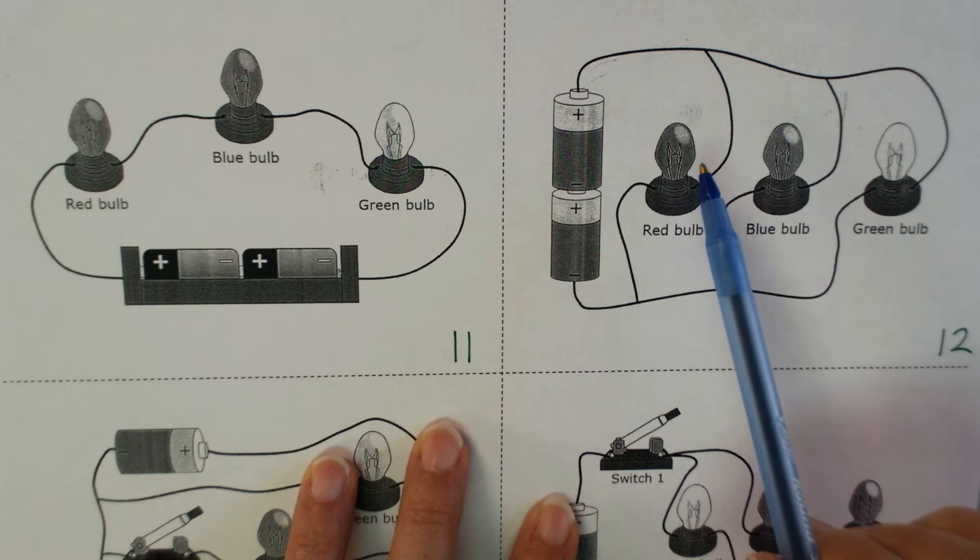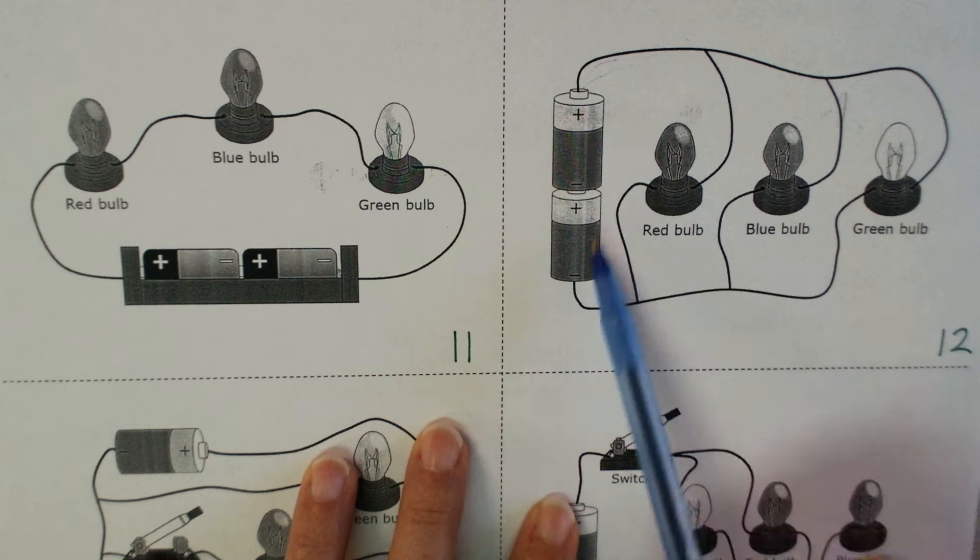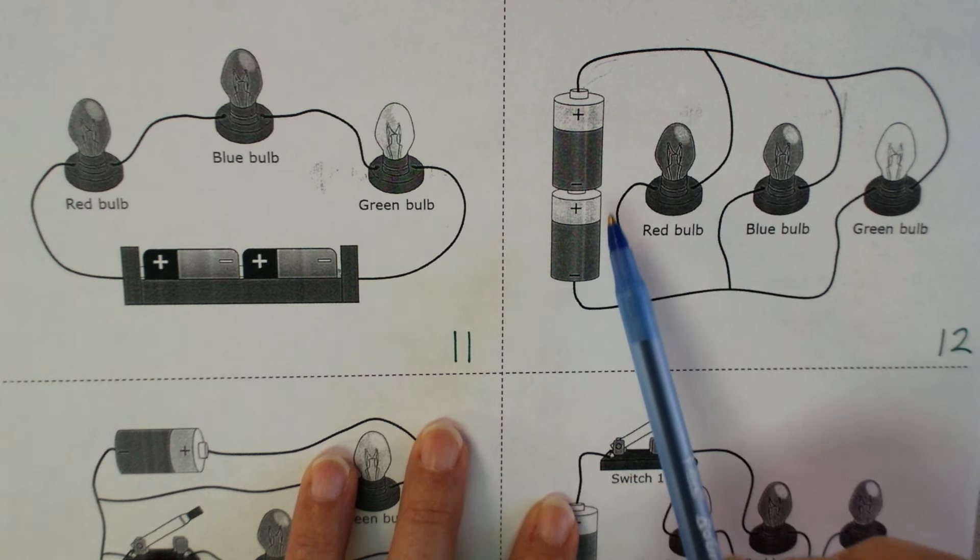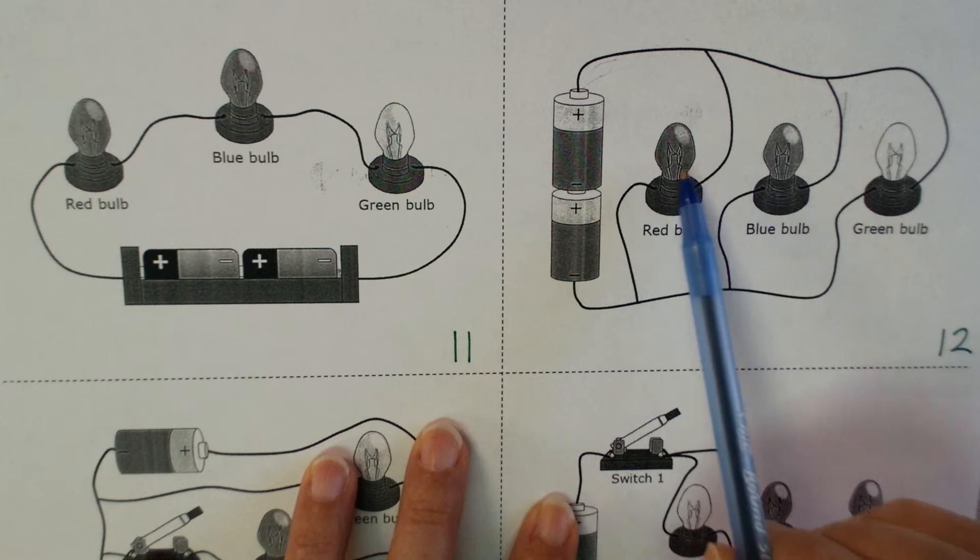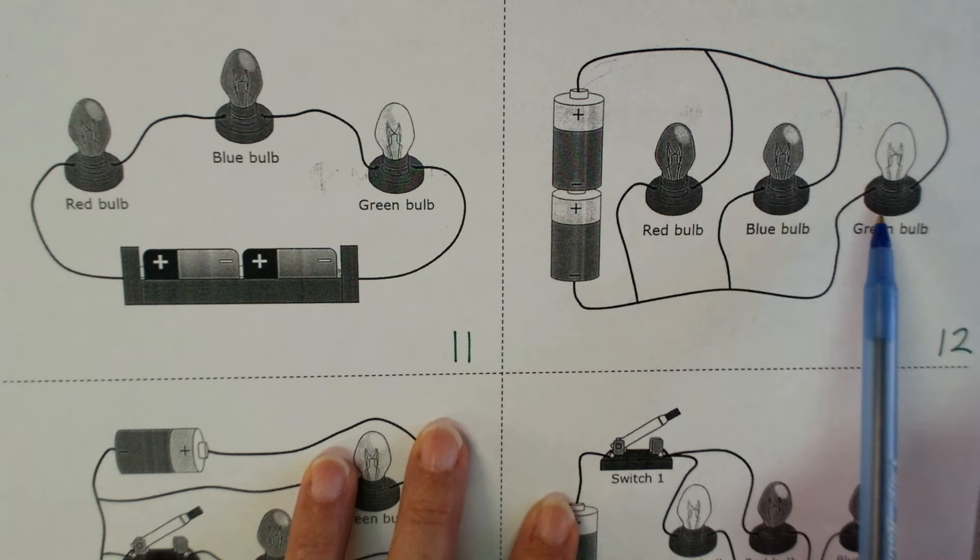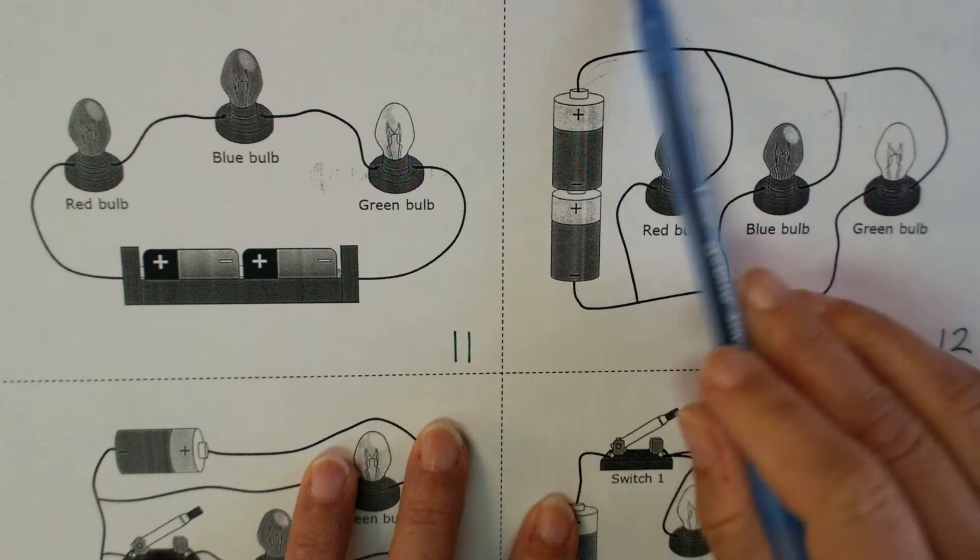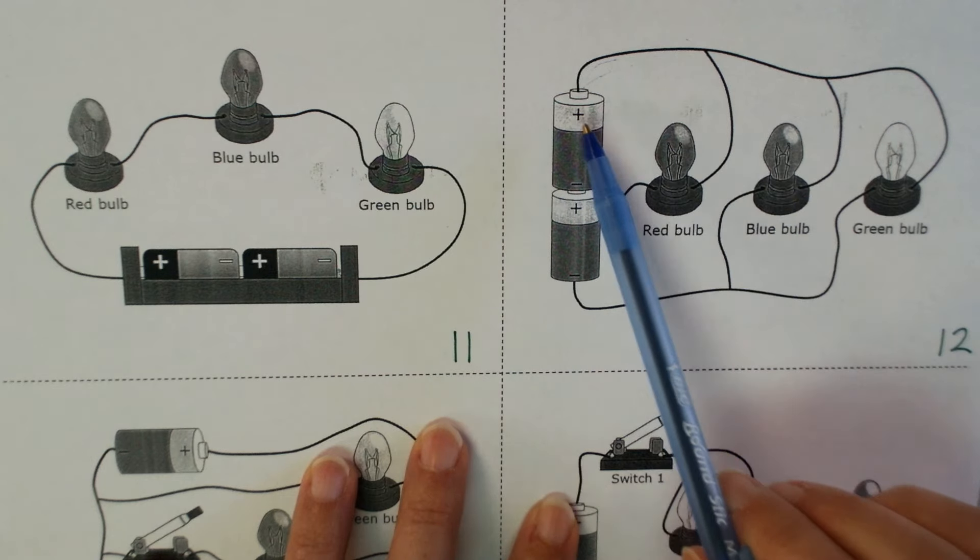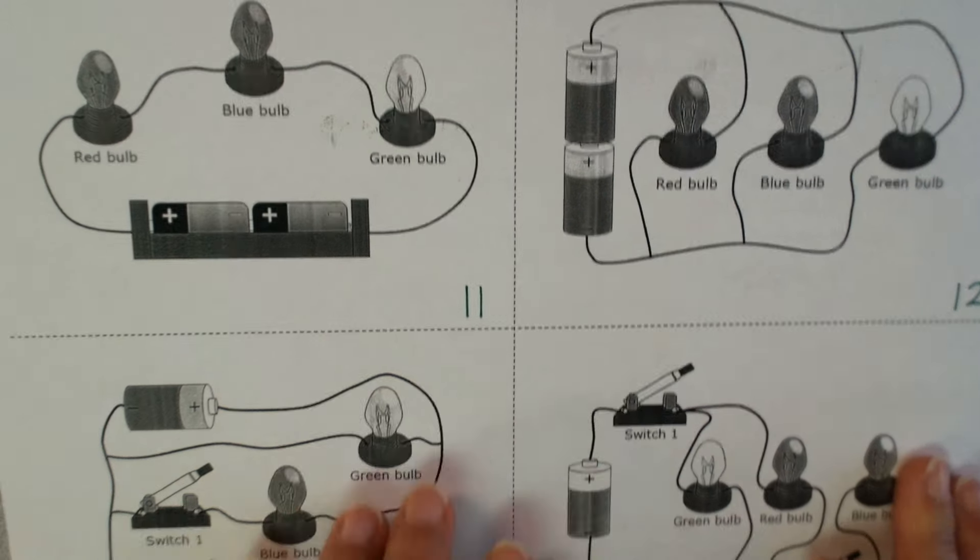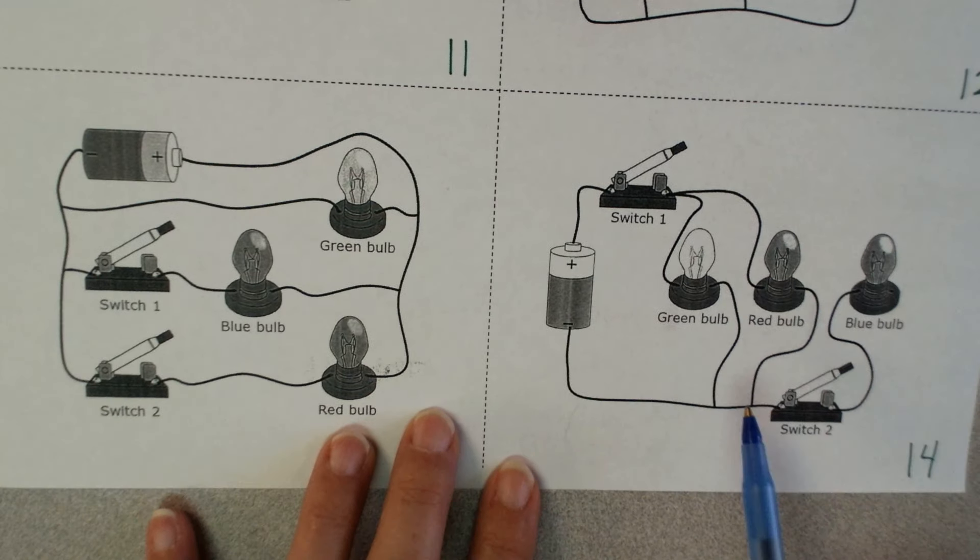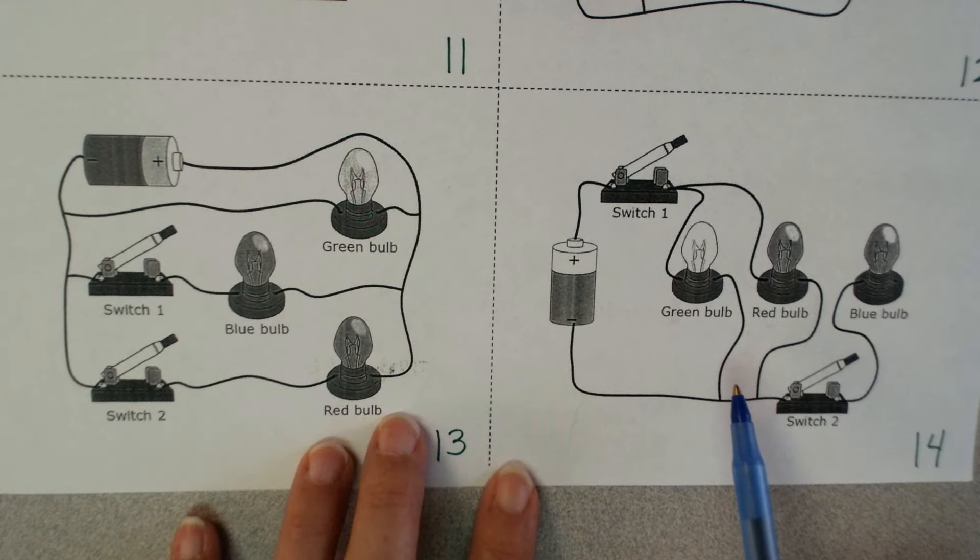Now one thing that's important to notice, these bulbs are going to be sharing the voltage of these batteries. So if I were to remove one of these batteries and just kept one, my bulbs are not going to shine as bright because I have less voltage. If I added a third battery into this, then they're going to shine even brighter because now we've increased the voltage.